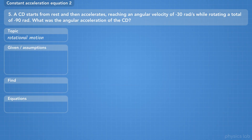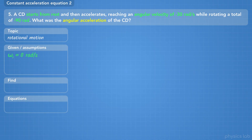A CD starts from rest and then accelerates, reaching an angular velocity of negative 30 radians per second while rotating a total of negative 90 radians. What was the angular acceleration of the CD? The CD starts from rest, so the initial angular velocity is 0 radians per second. The final angular velocity is negative 30 radians per second, and the angular displacement is negative 90 radians.